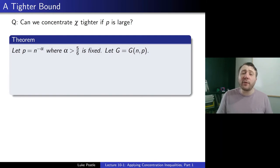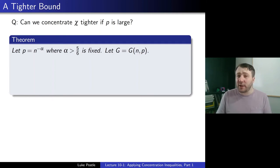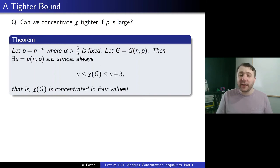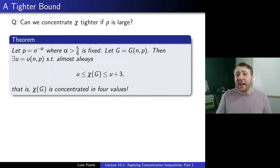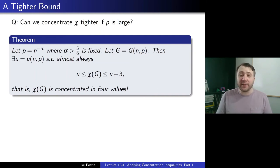Here's the theorem: let p = n^{−α} where α > 5/6 is fixed, and let G = G(n,p). Then there exists a u = u(n,p) such that almost always χ(G) is between u and u+3, so χ(G) is concentrated in four values. And actually, if p is even larger — more like n^{−1/2} — you can get this down to two values.